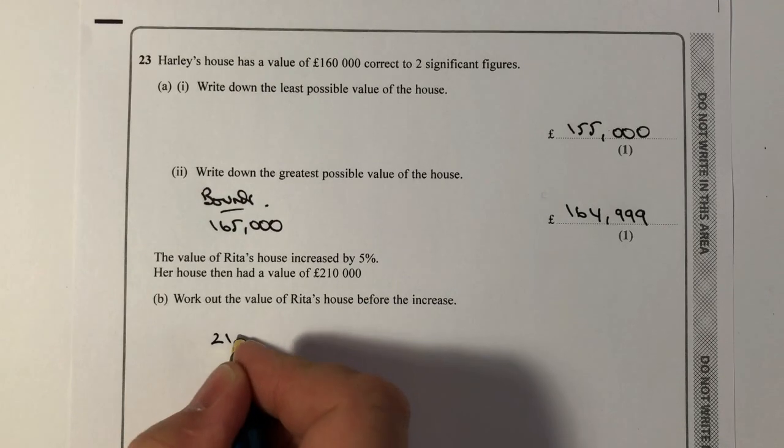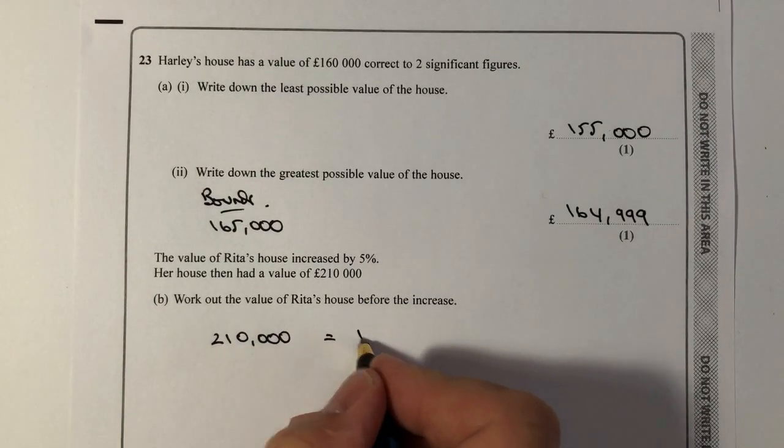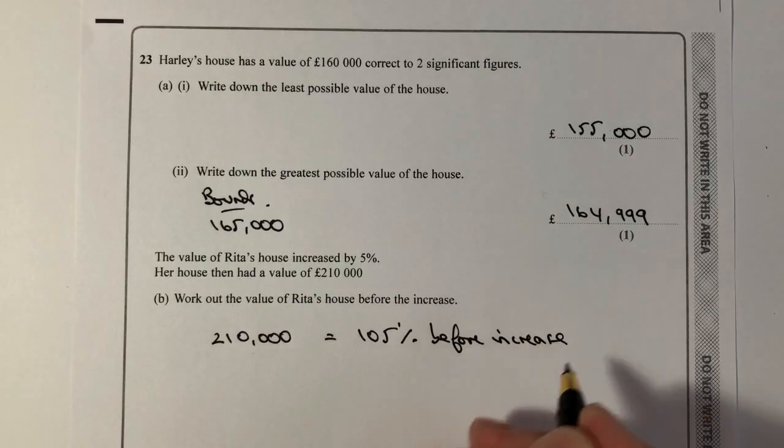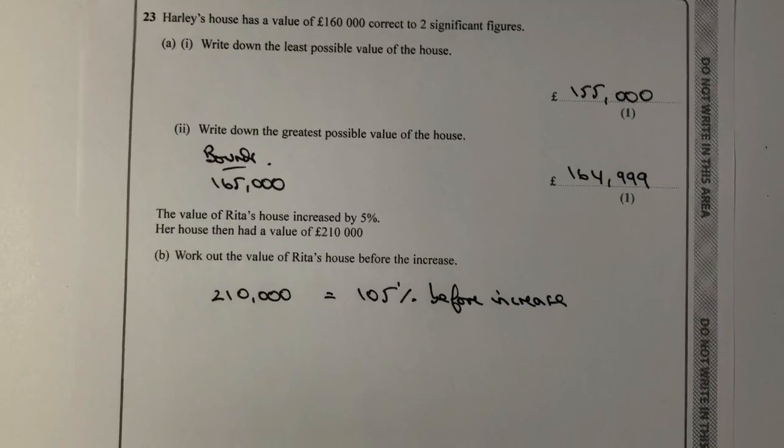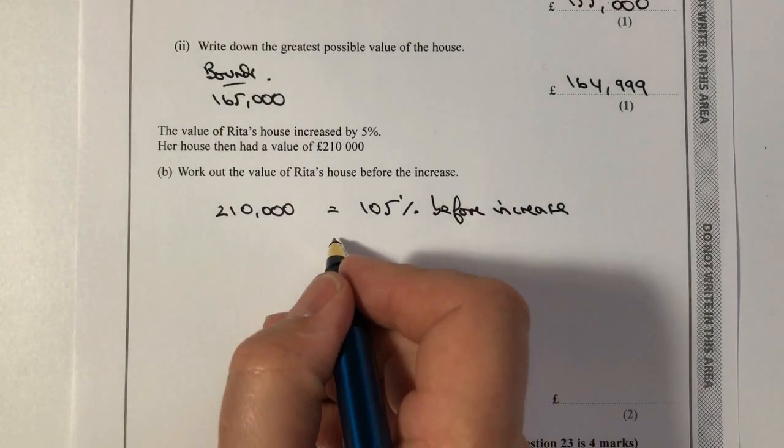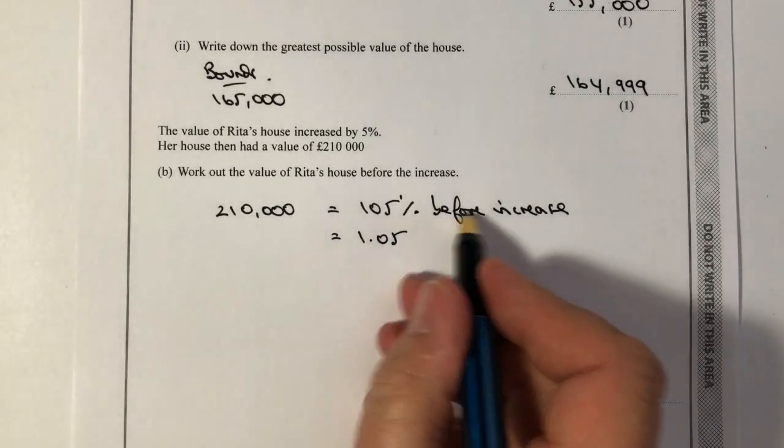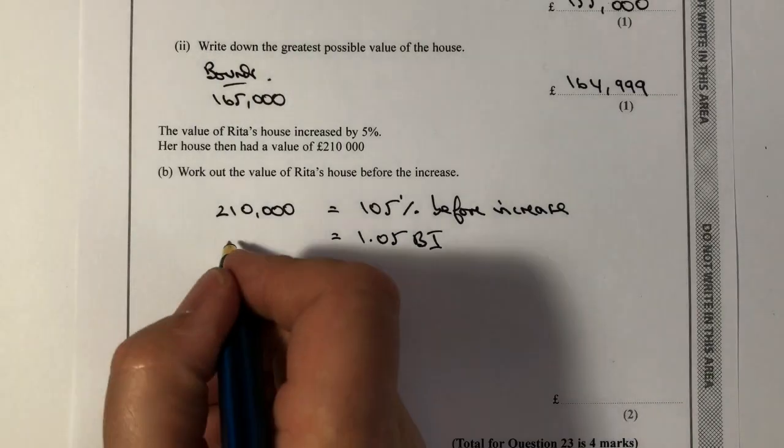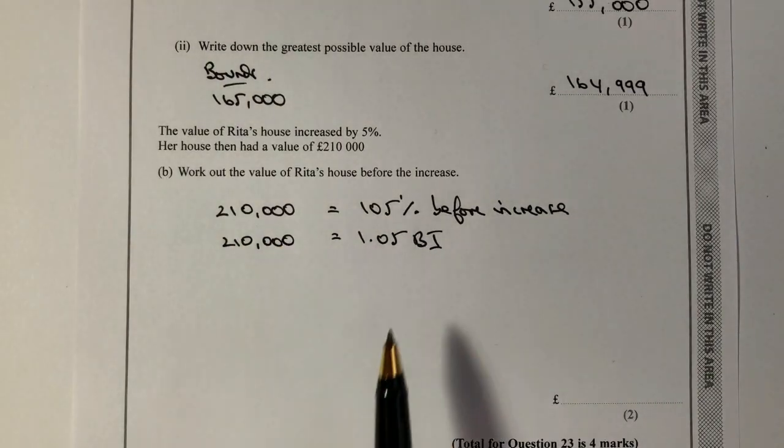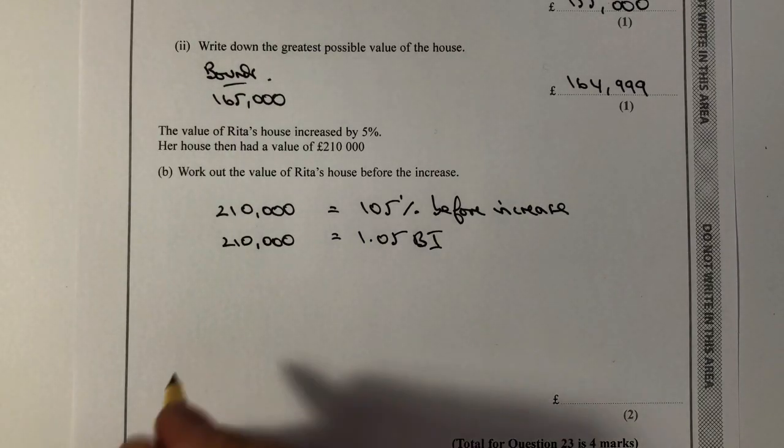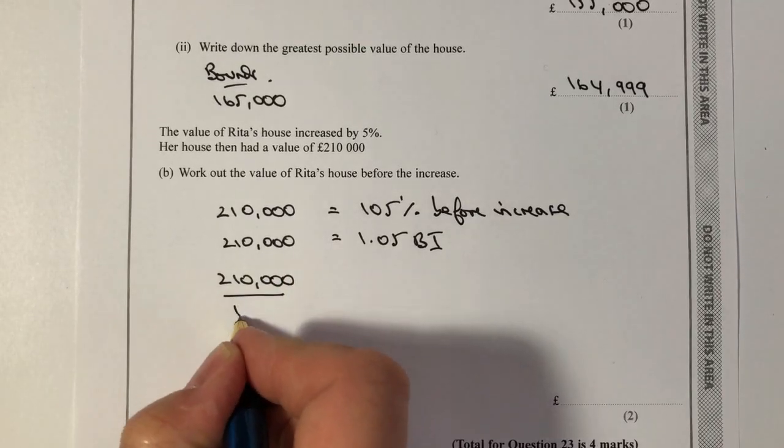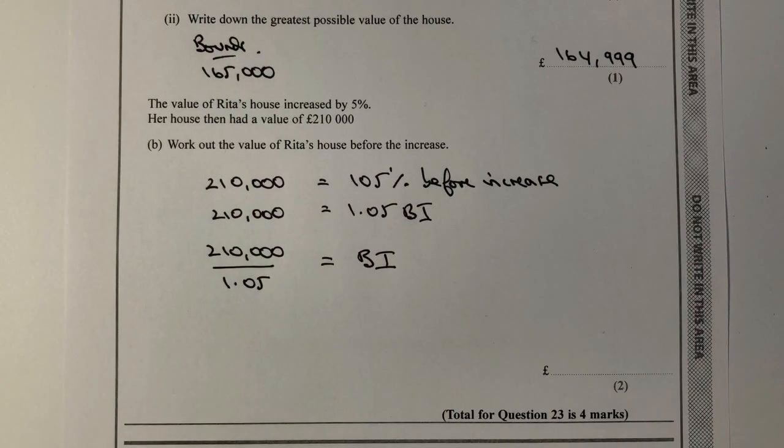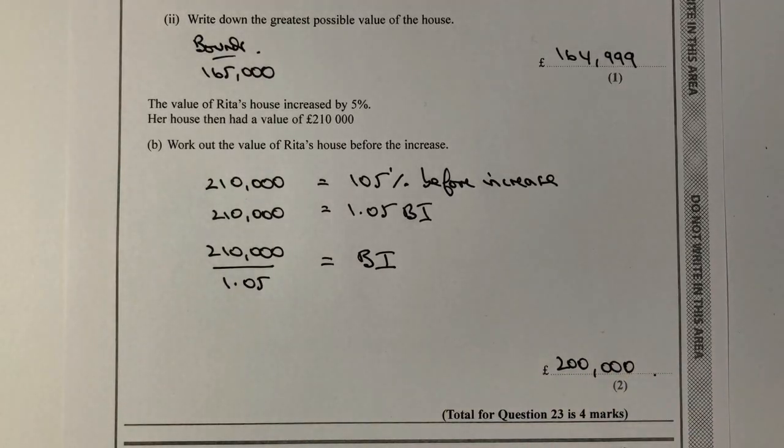What we're saying is that 210,000 equals a value of 105% before the increase. When you've got percentages, it's actually much easier to deal with making those into a decimal. So rather than that, I'm going to write 1.05. And rather than write before increase, I'm going to put BI, just because it's a bit quicker. And that equals 210,000. So if I want to work out the value of the BI, the before increase, what I do is I take that 210,000 and I divide by 1.05, and that equals the before increase. If I put that into my calculator, I'm going to get a value of 200,000. I hope that's okay for you.